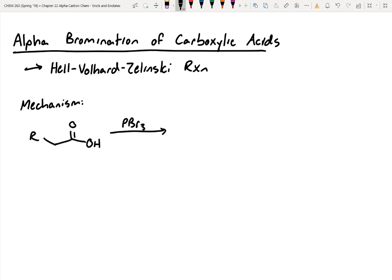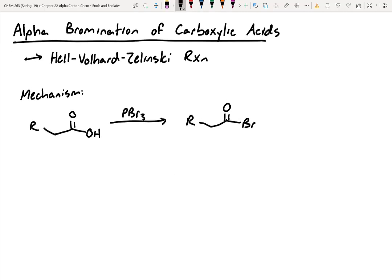In this mechanism you have some sort of carboxylic acid. Typically it won't be very functionalized because the next reagent we'll use is a pretty powerful reagent. It's PBr3. What do you think will happen to the starting material if you react it with PBr3? It'll brominate, right?